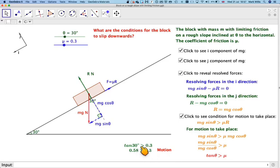So at the moment we've got tan 30. Is tan 30 greater than 0.3? Well, tan 30 is 0.58. And so that is greater than 0.3. So at this particular moment, the block will actually slip down.